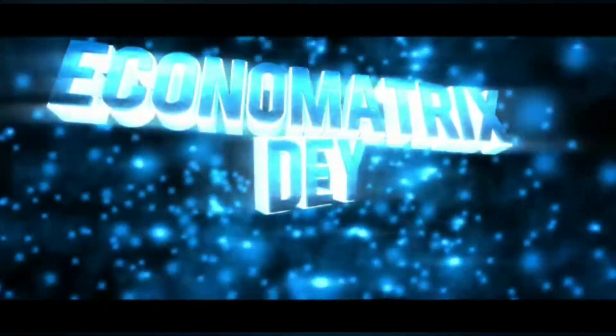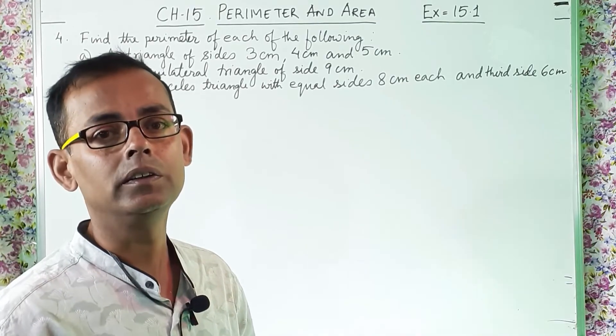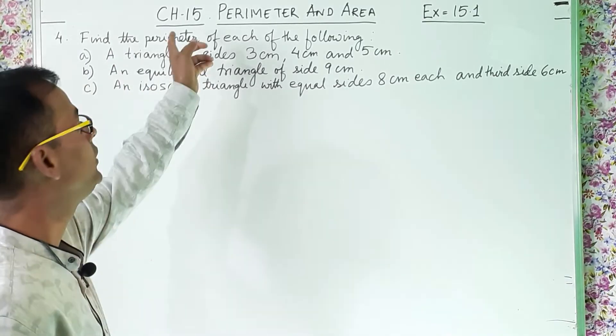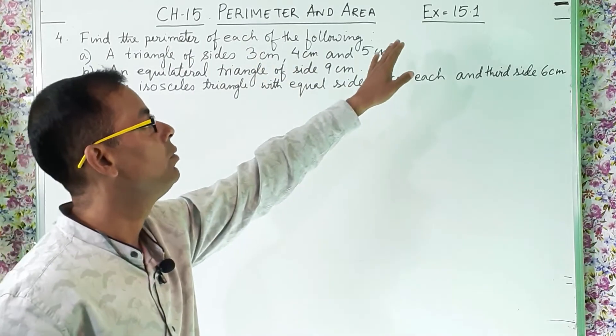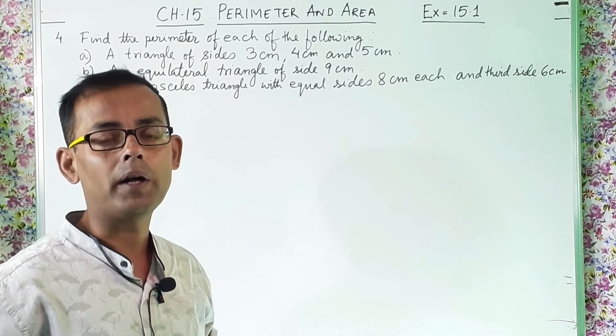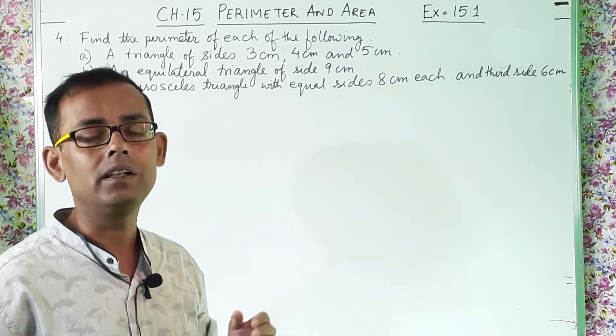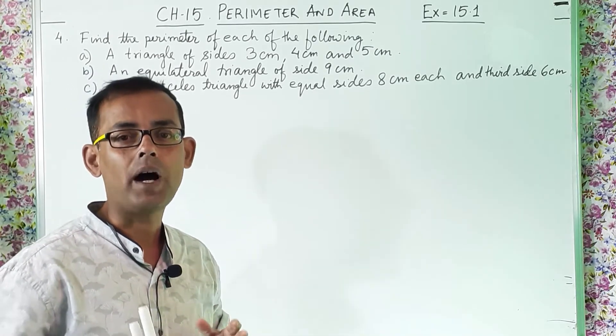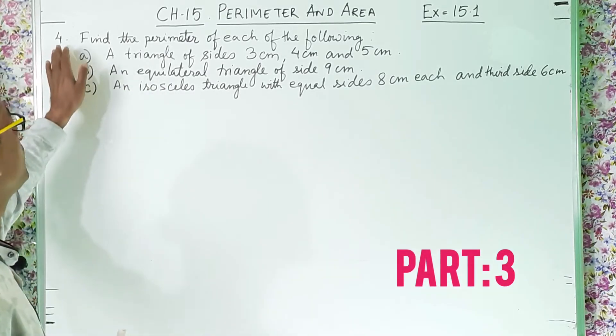Hello and welcome back to my channel. I am Surjit and you are watching Econometrics Day. Today we are going to study Class 7 Mathematics, Chapter 15 Perimeter and Area. We are going to solve Exercise 15.1. This is a continuation class — before this we have done Part 1 and Part 2, where we solved up to Question 3. This is Part 3, so today we are going to solve Question 4.